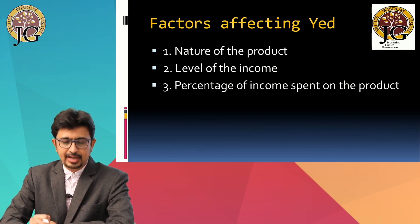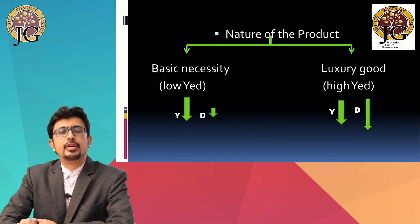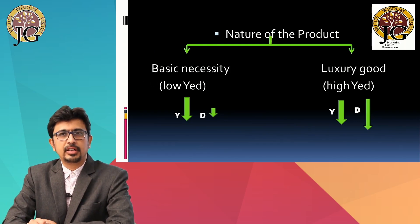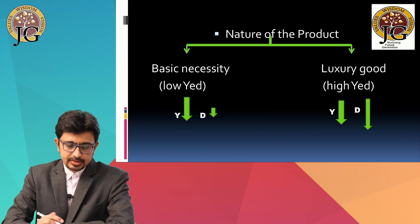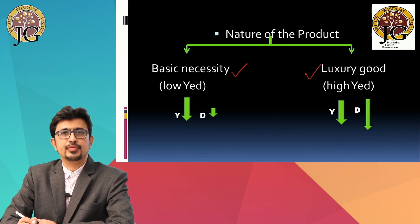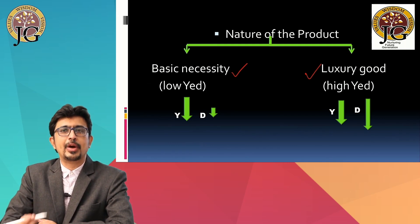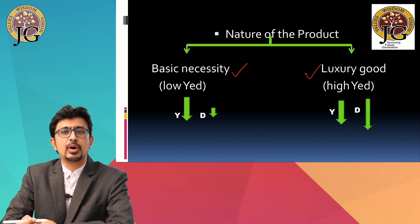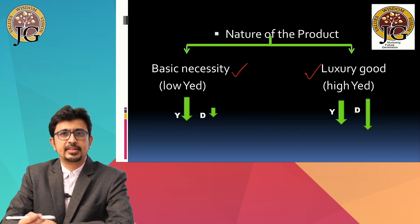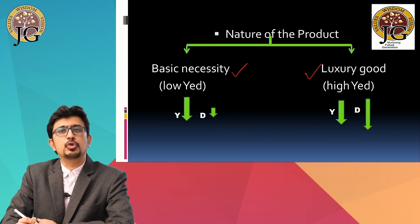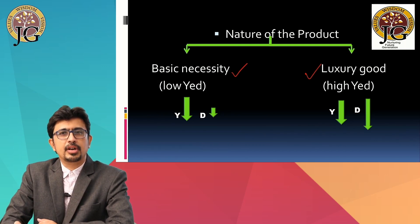Let us try to understand the first factor: the nature of the product. On the basis of nature, goods can be divided into two parts — basic necessities and luxury goods. Basic necessities are those goods without which people cannot survive, such as drinking water and food. Luxury goods are those without which we can live and survive, for example, an air conditioner, a motor car, or a refrigerator.